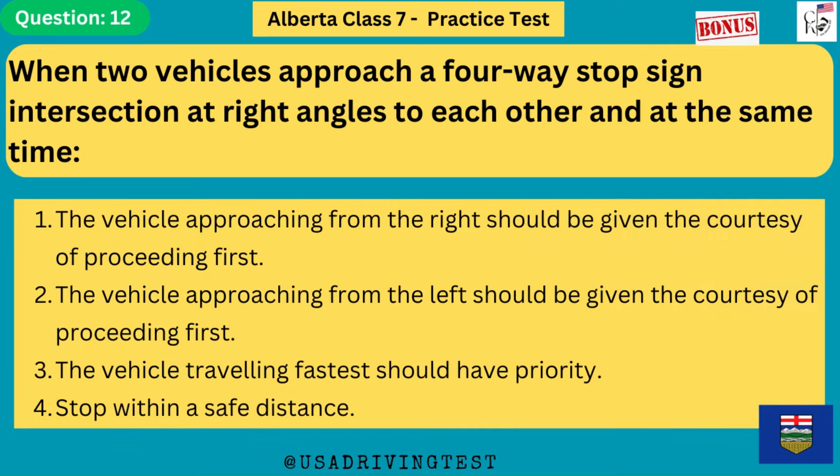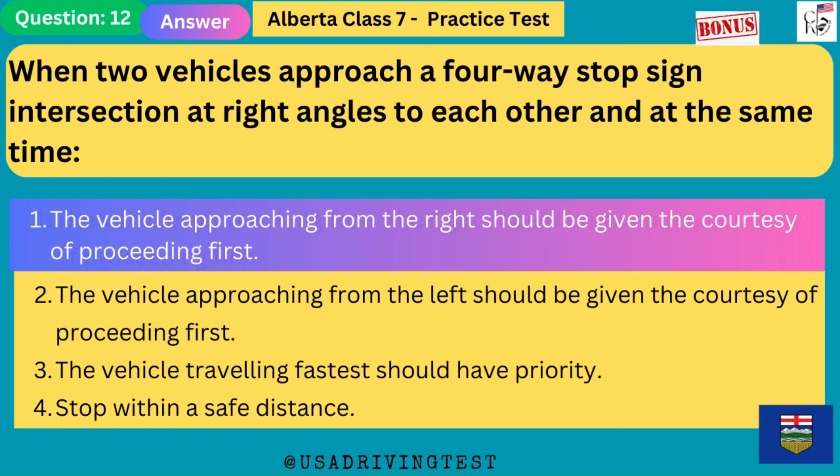When two vehicles approach a four-way stop sign intersection at right angles to each other and at the same time: 1. The vehicle approaching from the right should be given the courtesy of proceeding first. 2. The vehicle approaching from the left should be given the courtesy of proceeding first. 3. The vehicle traveling fastest should have priority. 4. Stop within a safe distance. The answer is 1: the vehicle approaching from the right should be given the courtesy of proceeding first.